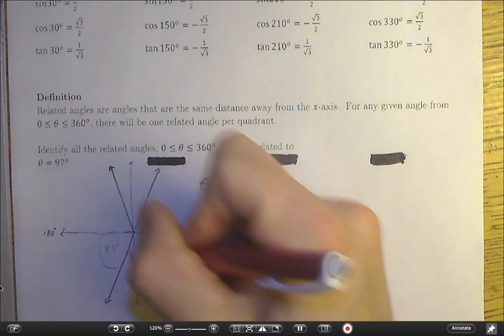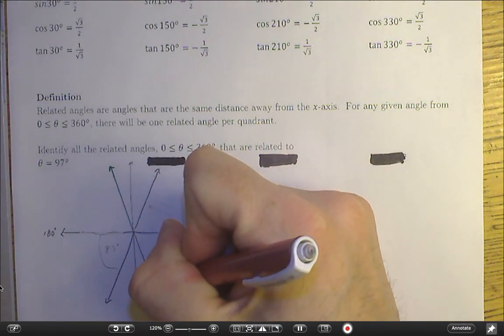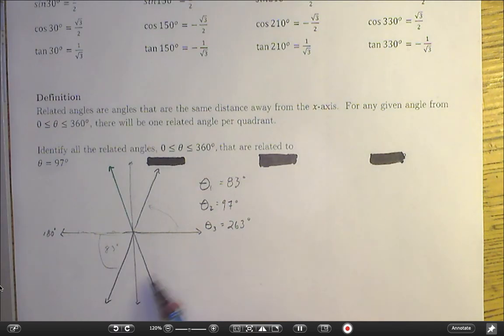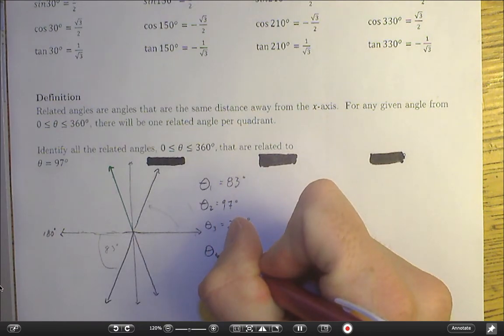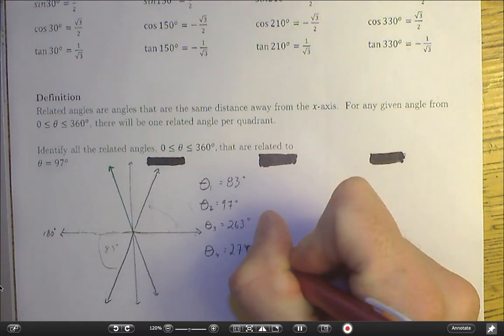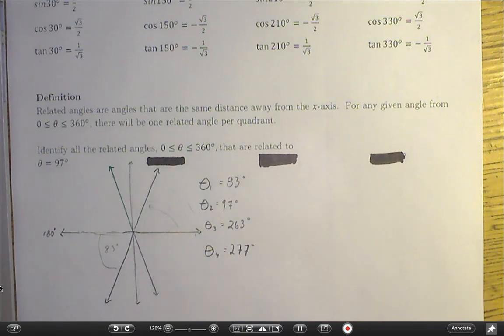My quadrant 4 related angle is still 83 degrees away from the x-axis, but now it is going to be 360 minus 83. I believe that is 277.